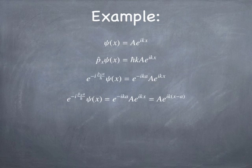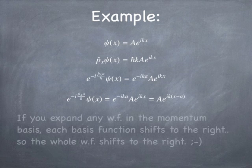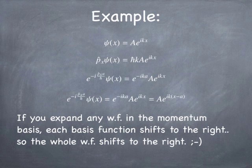Does it work for any other wave function? Yes, it has to, because I can always rewrite any wave function as a superposition of momentum eigenstates — in other words, I can do the Fourier transform. Each Fourier component is a momentum eigenstate, and each will be shifted to the right. So if I shift all the Fourier components to the right and then inverse Fourier transform, I get back the same wave function except shifted to the right. It makes obvious sense.